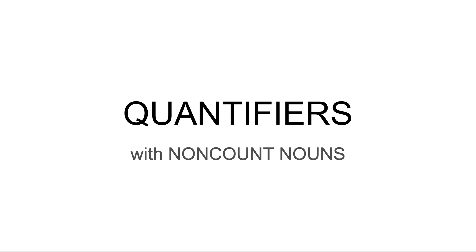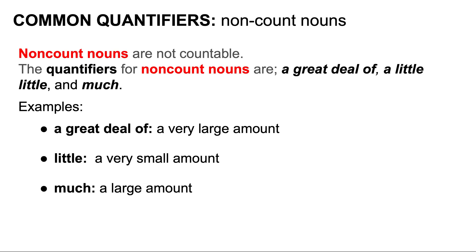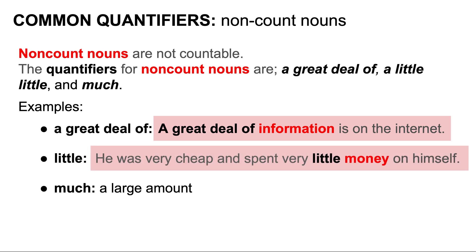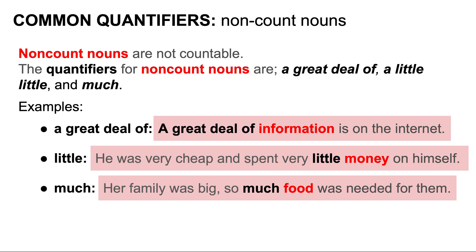Now let's look at the quantifiers for non-count nouns. Non-count nouns, as we mentioned, are not countable. The quantifiers for non-count nouns are a great deal of, a little, little, and much. A great deal of means a very large amount — for example, 'a great deal of information is on the internet.' Little means a very small amount — 'he was very cheap and spent very little money.' Much means a very large amount — 'her family was big, so much food was needed for them.'